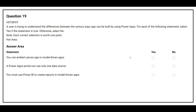Question 19: A user wants to understand the differences between the various ways apps can be built using Power Apps. For each statement, select Yes if true, otherwise No. First: You can embed a canvas app in model-driven apps — correct answer is Yes. Second: A Power Apps portal can use only one data source — correct answer is No. Third: You must use Power BI to create reports in model-driven apps — correct answer is No.